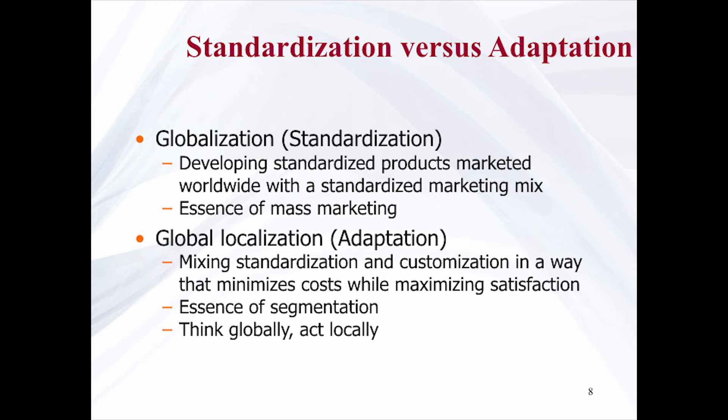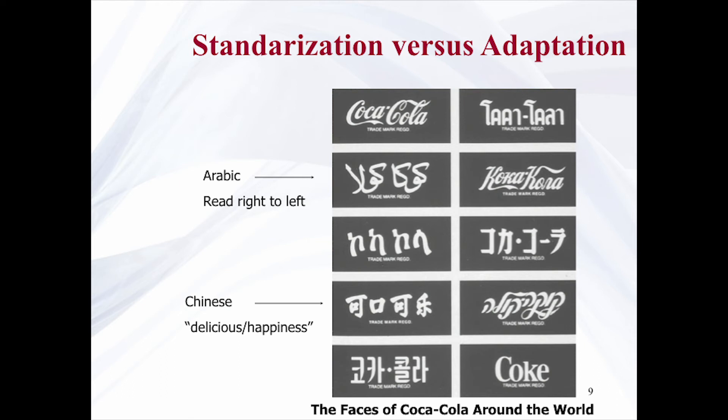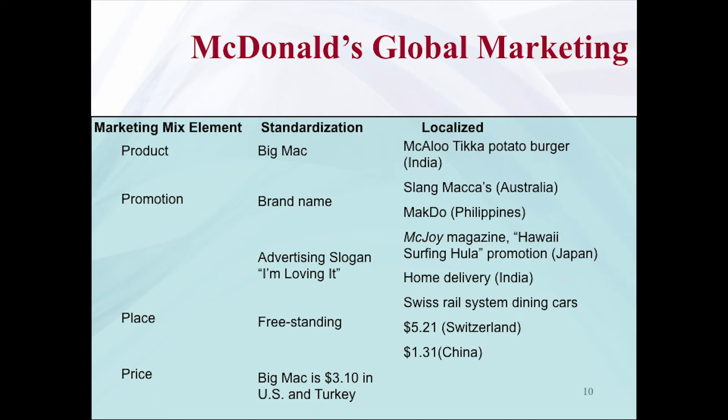Think globally, act locally. The design is basically the same but the name is frequently transliterated into local languages. The Arabic label is read right to left and the Chinese label translates to 'delicious' or 'happiness'.